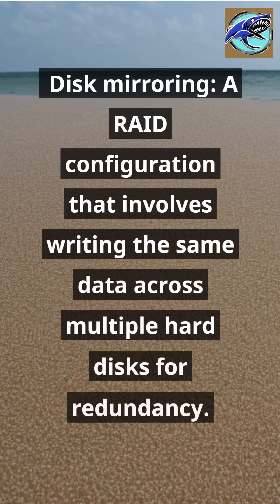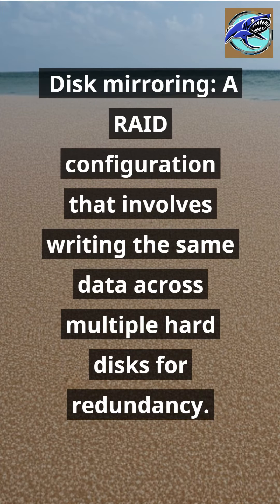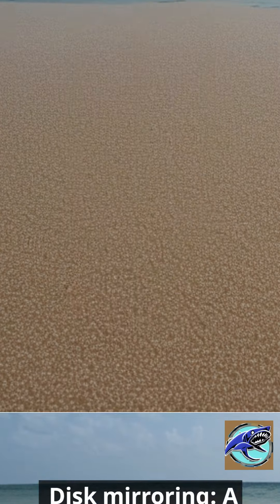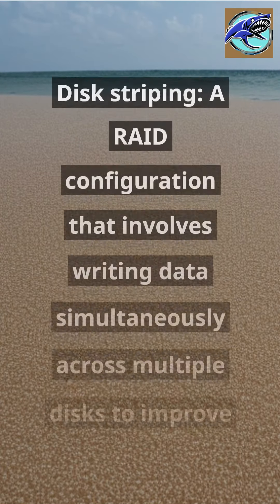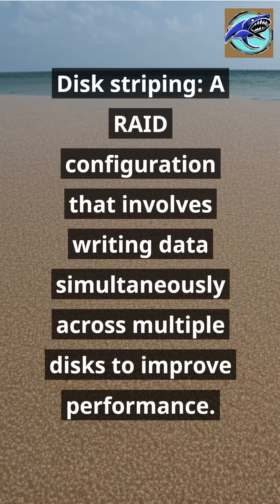Disk Mirroring: a RAID configuration that involves writing the same data across multiple hard disks for redundancy. Disk Striping: a RAID configuration that involves writing data simultaneously across multiple disks to improve performance.